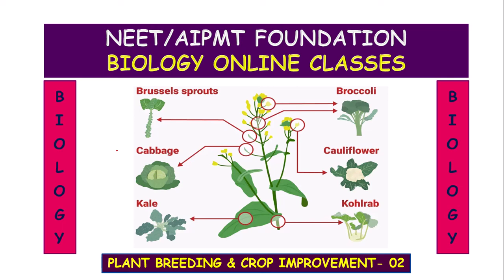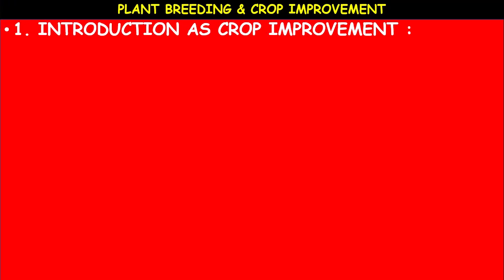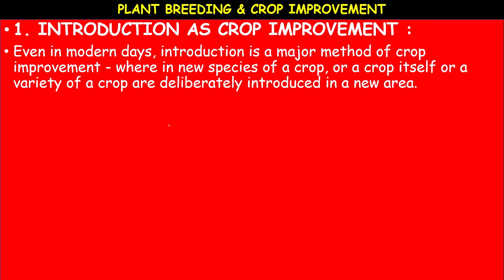There are several steps involved in plant breeding. Every method of crop improvement or plant breeding has its own steps and techniques. Let us study the first method — introduction. Introduction is a major method of crop improvement, even in modern days, where a new species of a crop, or the crop itself, or a variety of crop is deliberately introduced in a new area.